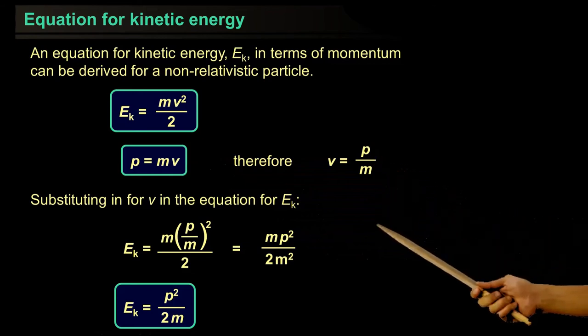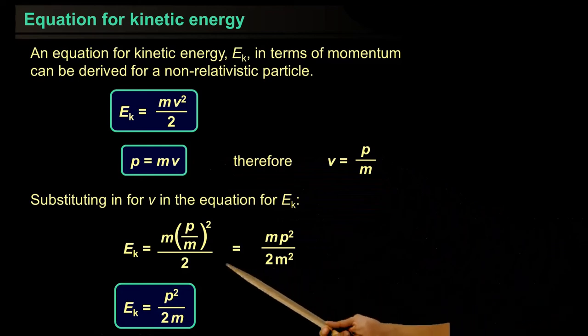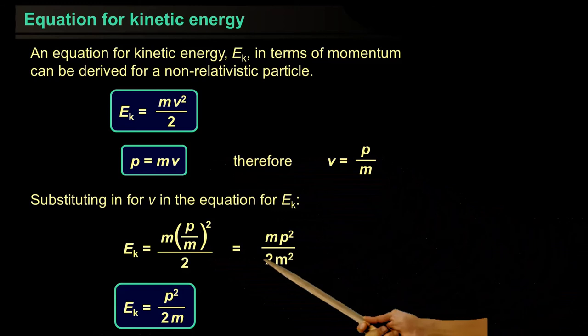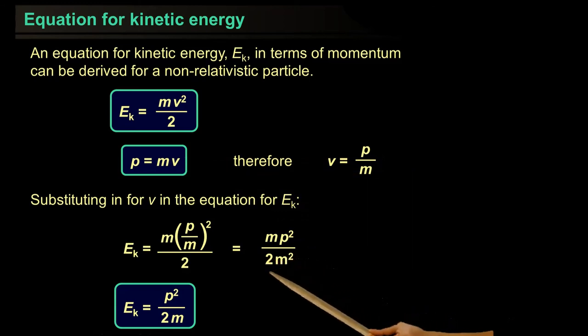If we solve it further, we will get kinetic energy equals momentum squared divided by double the mass. Ek equals p squared over 2m.